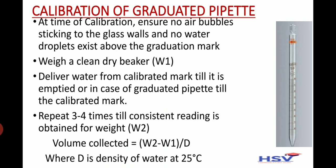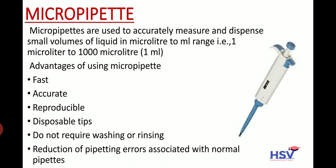Micro pipettes are used to accurately measure and dispense small volumes of liquid in the microliter to milliliter range, that is 1 microliter to 1000 microliters. The available micro pipettes transfer an exact volume — you can assign the volume you want to transfer and adjust it.